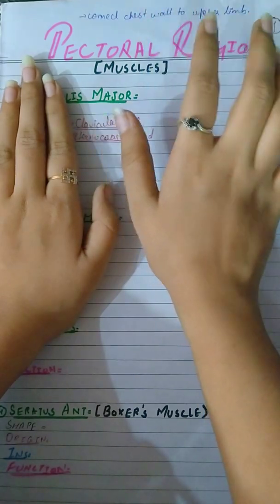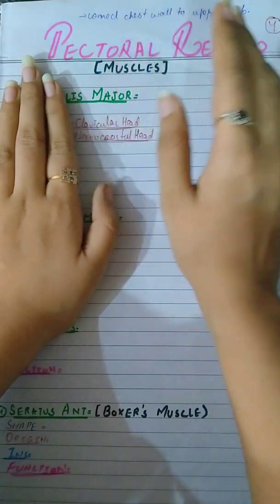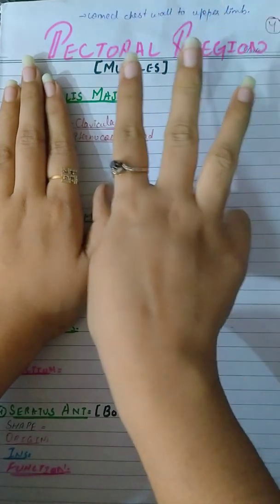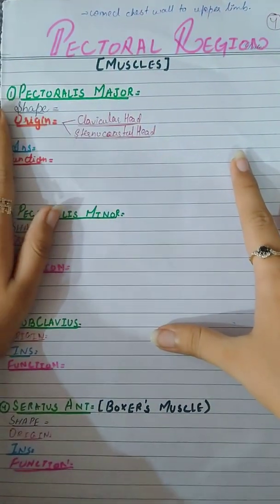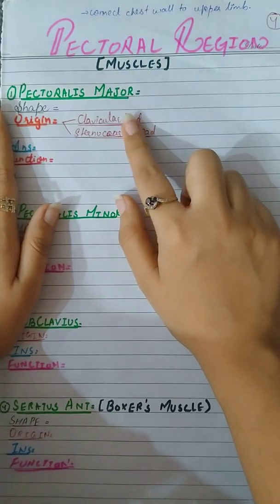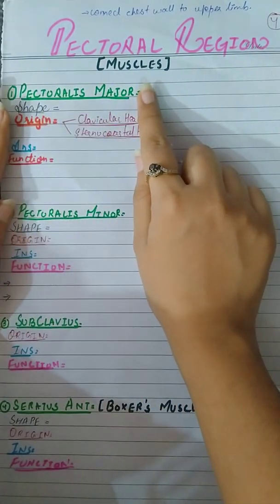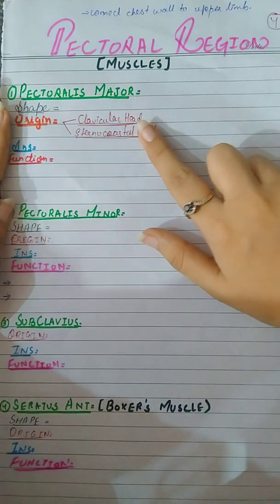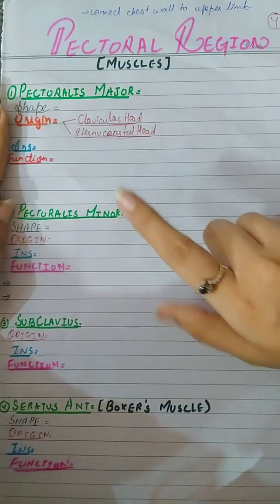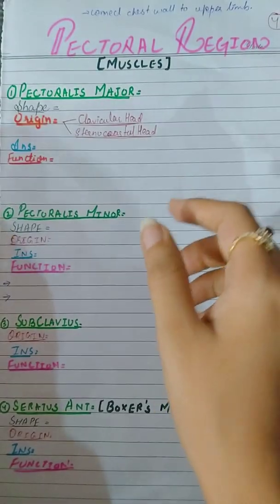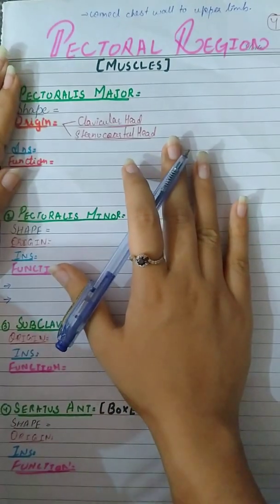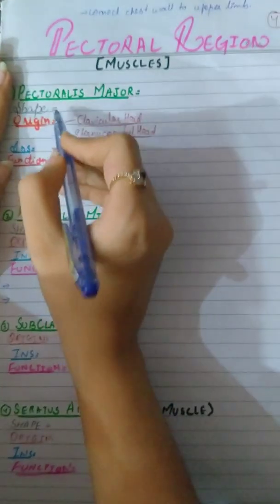In some books the serratus anterior is not included, so there are three muscles. The first muscle is pectoralis major. As it's a pectoral region, two muscles will be obvious: pectoralis major and pectoralis minor. Let's first study the pectoralis major and its shape.